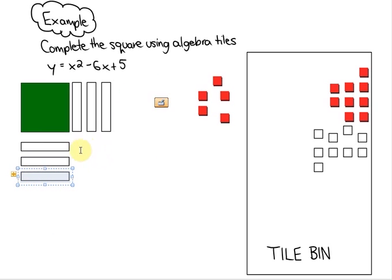Now you need to ask yourself, what needs to be placed here? What integer tiles need to be placed here in order to complete this square. And in this case it is positive 9 because negative 3 times negative 3 is positive 9.